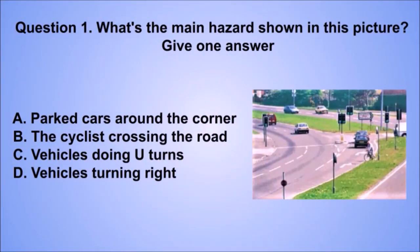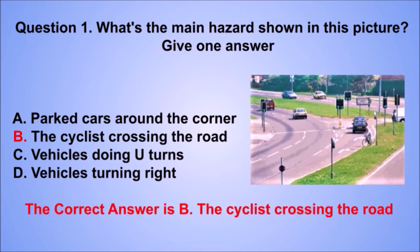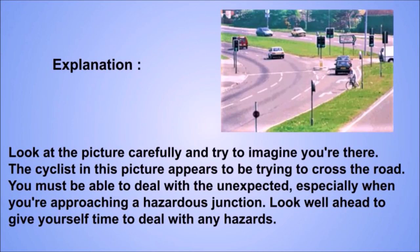Question 1. What's the main hazard shown in this picture? The correct answer is B: The cyclist crossing the road. Look at the picture carefully and try to imagine you're there. The cyclist appears to be trying to cross the road. You must be able to deal with the unexpected, especially when approaching a hazardous junction. Look well ahead to give yourself time to deal with any hazards.